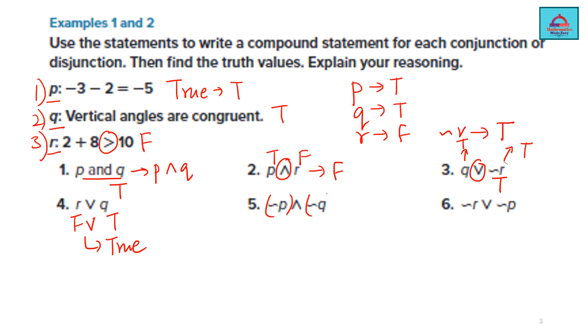Now this is negation of p and negation of q along with the symbol conjunction so negation of p is going to be false negation of q is also going to be false and together their conjunction is going to give you false the final answer is false. Now negation of r is going to be true negation of p is also going to be false and if you take its disjunction it is going to be true.